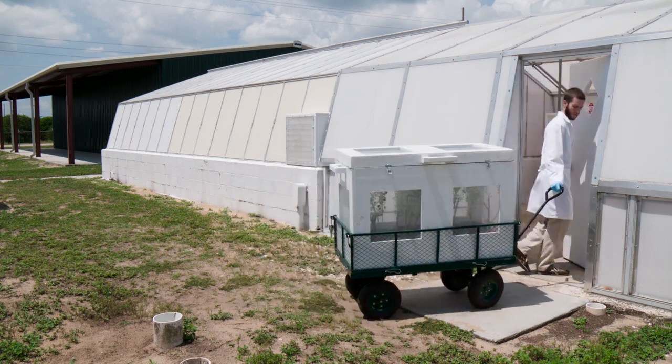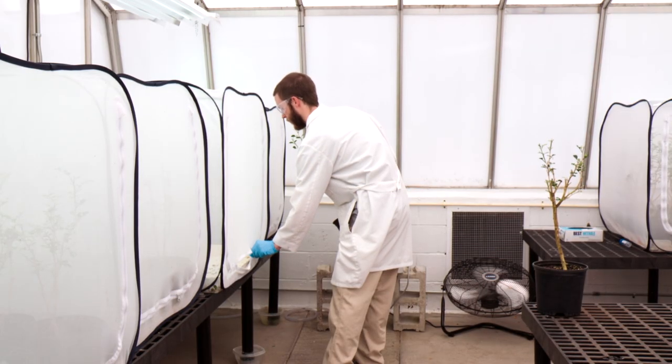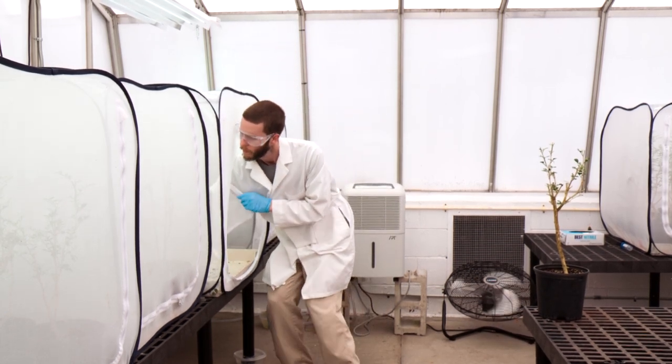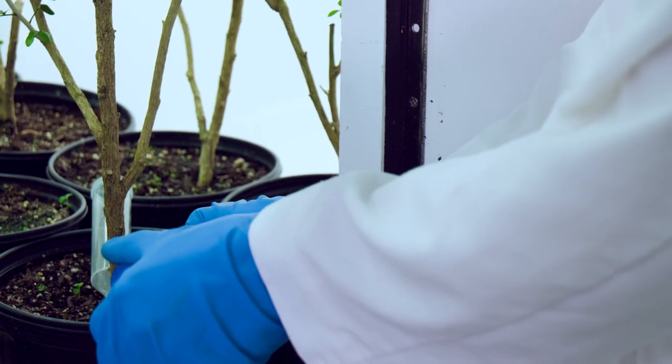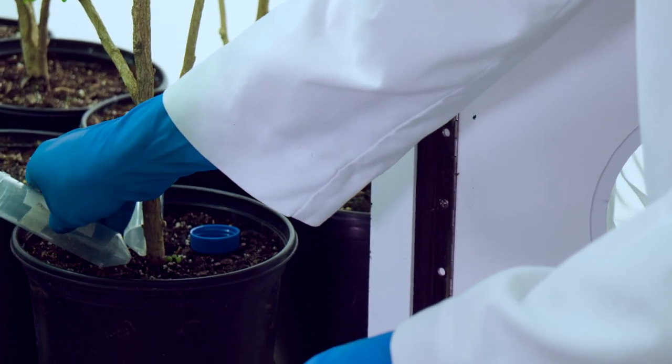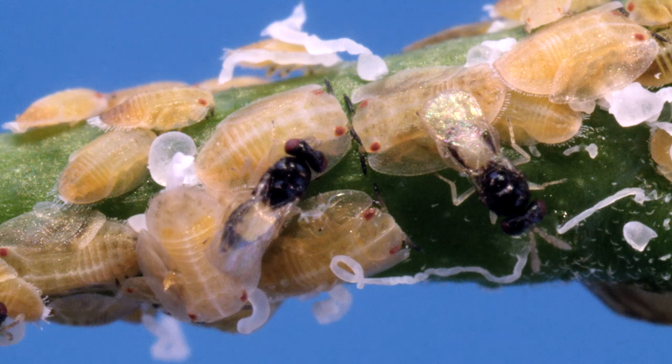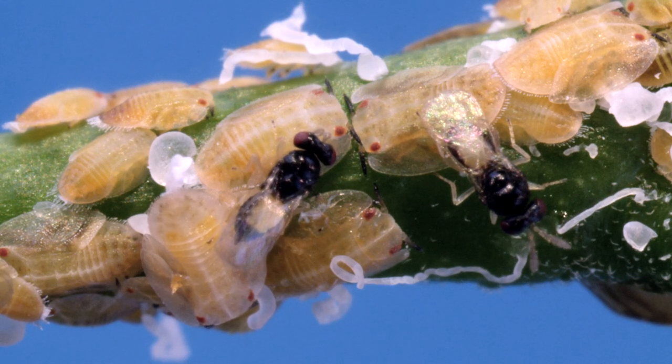Once inside the psyllid rearing house, the plants are placed into clean cages. Based on the level of flush of the selected plants, 3,000 to 4,000 adult Asian citrus psyllids are released into the cage and allowed time to oviposit on the new flush. Cages remain undisturbed for approximately 3 days.